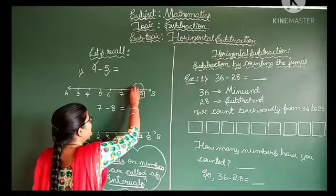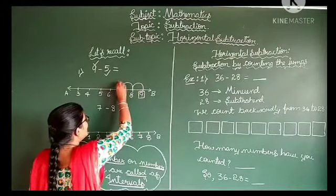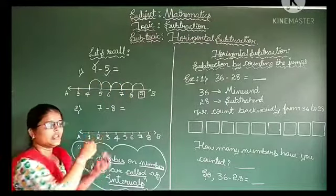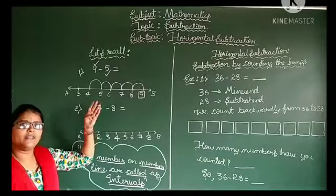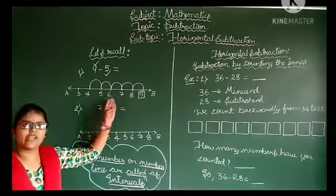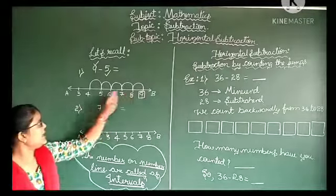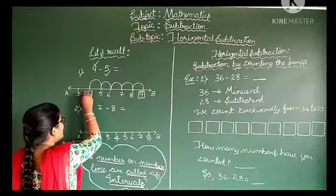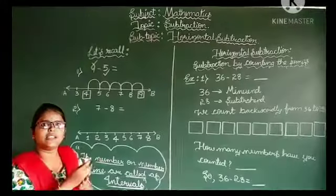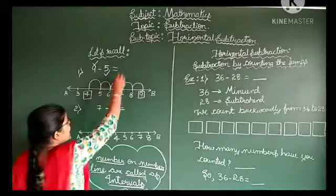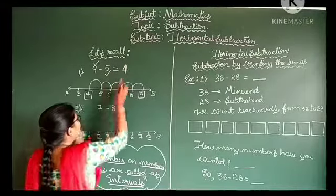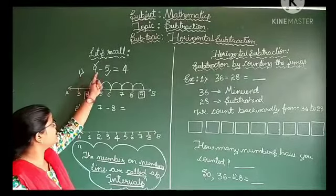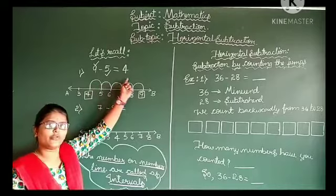Look at the board: 1, 2, 3, 4, 5. We have jumped 5 steps backward, to the left of the number line. Then we reach a number, and that number is called the difference. We reach the number 4. Therefore, 9 minus 5 is equal to 4.